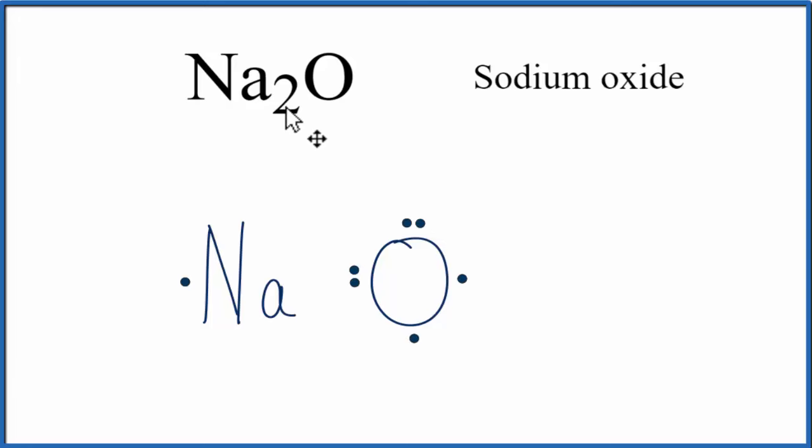But we said we had two Na's, so let's copy one and put it on the other side. So at this point, we have our Na2 and then the O.